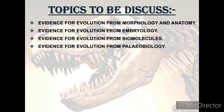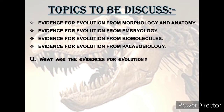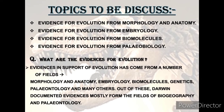The first question that comes to mind is: what are the evidences for evolution? The answer is that evidences in support of evolution have come from a number of fields — morphology and anatomy, embryology, biochemical, genetics, and paleontology. Out of these, Darwin documented evidences mostly from the fields of biogeography and paleontology.